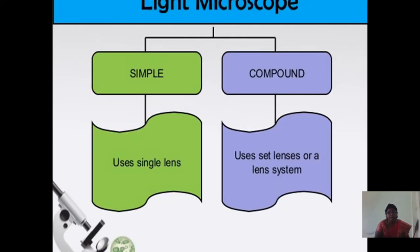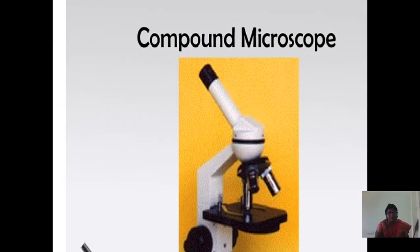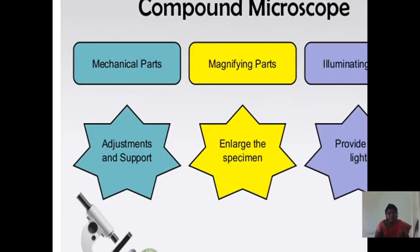Light microscopes are of two types: simple and compound. A simple microscope uses a single lens. A compound microscope uses a set of lenses or a lens system. This is the simple light microscope and this is the compound microscope.